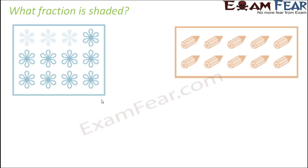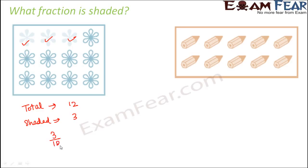Let us look at more examples. Here you see a lot of flowers — twelve flowers in total. How many of them are shaded? The first three are shaded, so only three flowers out of twelve are shaded. That means three-twelfths of the picture is shaded. Three-twelfths can also be written as one-fourth, because three fours are twelve, so one-fourth of the picture is shaded.